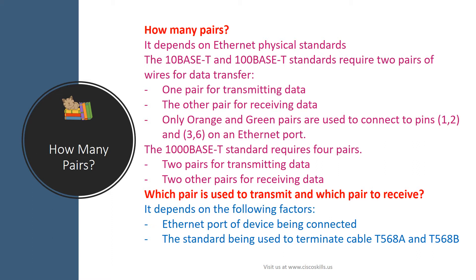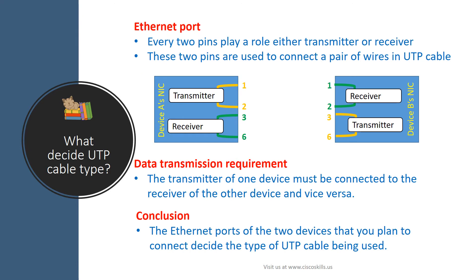The answer depends on two factors: the Ethernet ports of the devices being connected, and the standard used to terminate the cable — T568A or T568B. To answer what decides the type of UTP cable being used, let's look into an Ethernet port. Every two pins in an Ethernet port play a role either as transmitter or receiver.